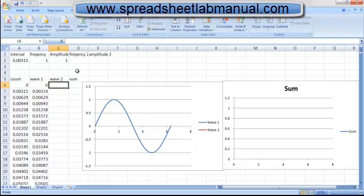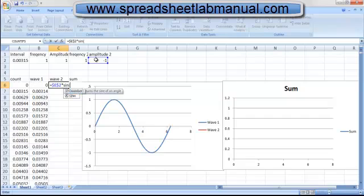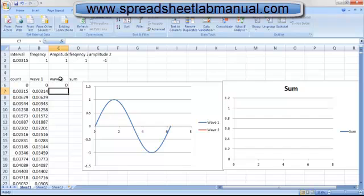Now, we want to create a second wave with the same process. And to see that we're correct, we'll put in a frequency of 1, but an amplitude of minus 1. And we'll set that up as equal to the amplitude, F4, times the sine of the frequency, F4, times the count. And we'll double click that.